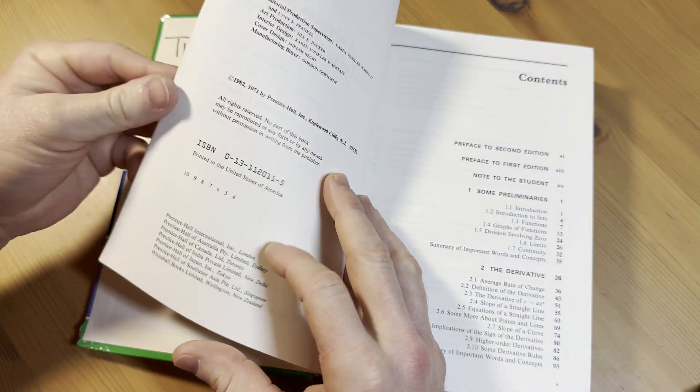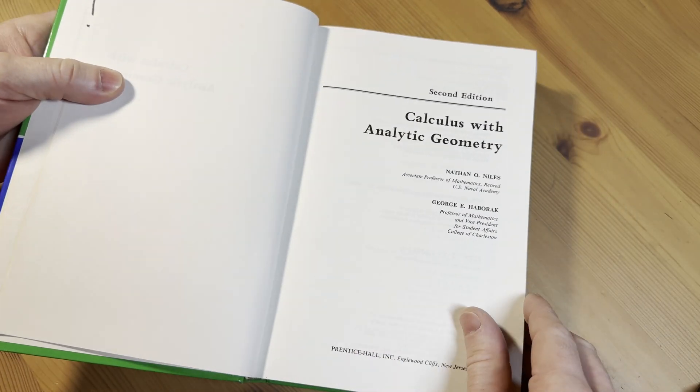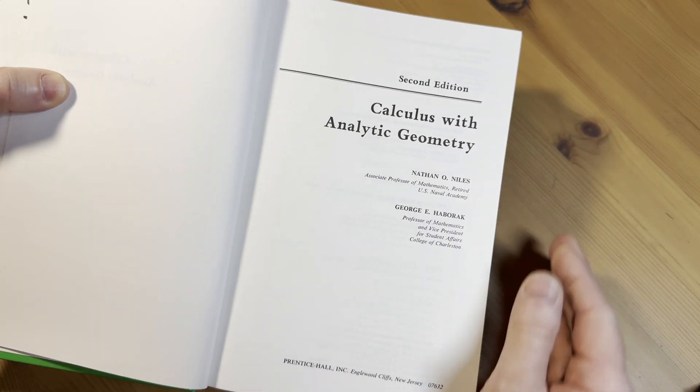Let's take a look at the inside of this book. In this video, we're going to take a look at this book and see what it contains. So this is the second edition. Calculus with Analytic Geometry.